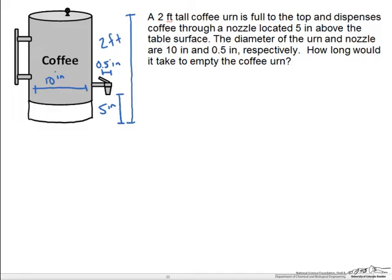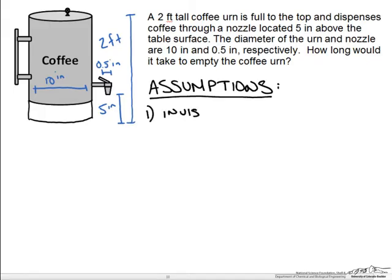At this point in the problem we need to make our assumptions to help us solve. To use the Bernoulli equation we are going to assume that the flow is inviscid, that there are no viscous effects. We are going to assume that the flow follows specific streamlines and lastly we are going to assume that it is incompressible.